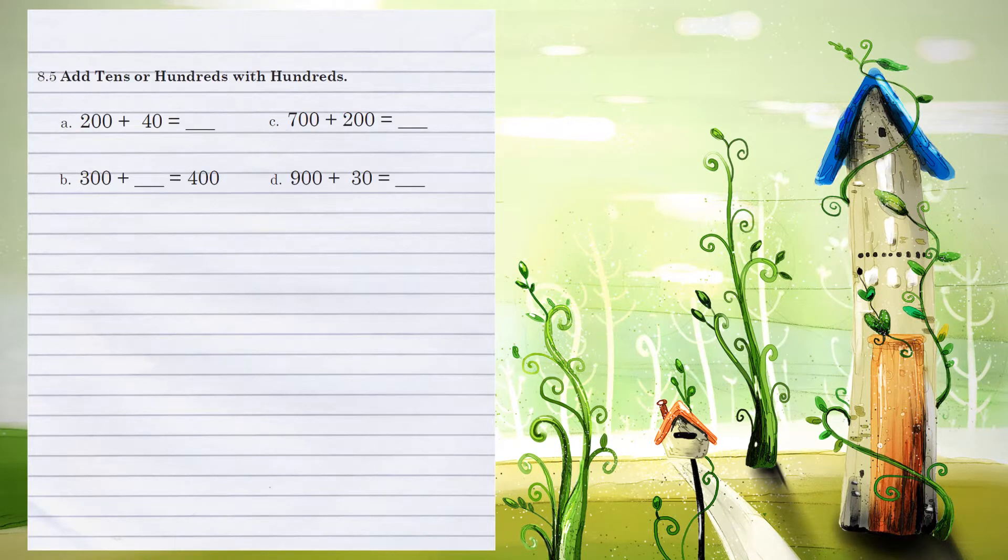Unit 8.5, adding 10s or 100s with 100s. Example A, 200 plus 40. So one step at a time. 1s position: 0 plus 0, that's 0. 10s position: 0 plus 4, that's 4. 100s position: there's only one number, so we bring the 2 over for an answer of 240.